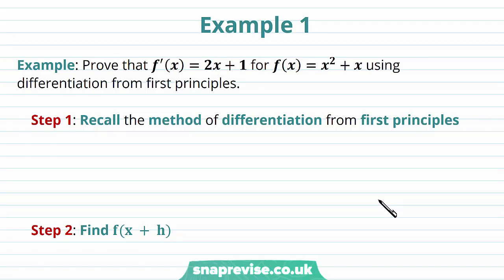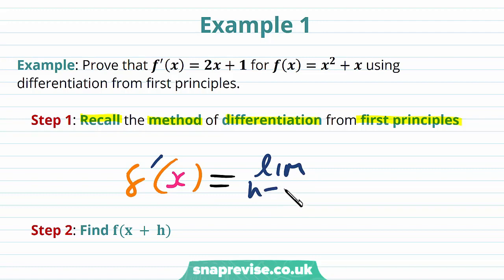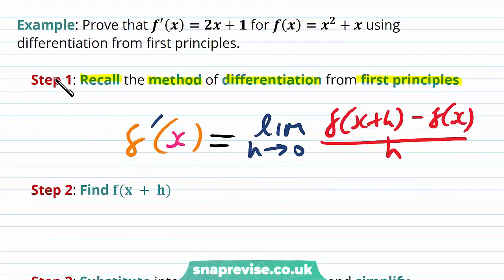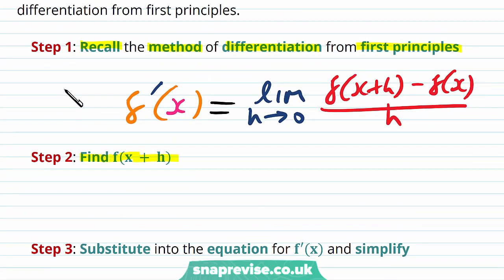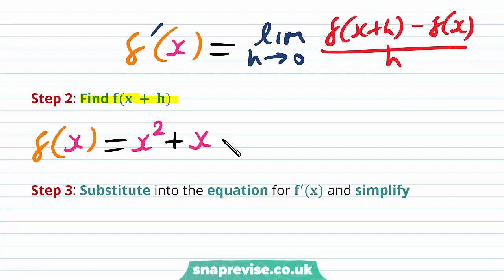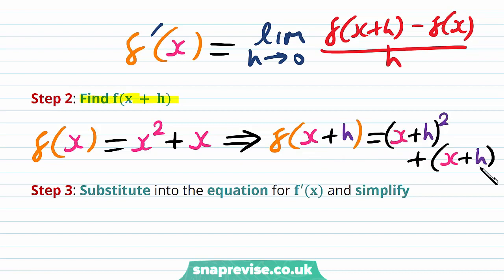Our first example asks us to prove that f'(x) = 2x + 1 for f(x) = x² + x, using differentiation from first principles. Our first step is to recall the method: f'(x) equals the limit as h tends to 0 of [f(x+h) - f(x)] / h. Our second step is to find f(x+h). We have f(x) = x² + x, and therefore f(x+h) = (x+h)² + (x+h).